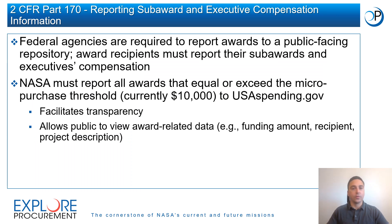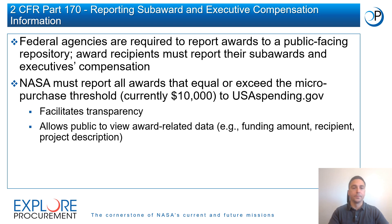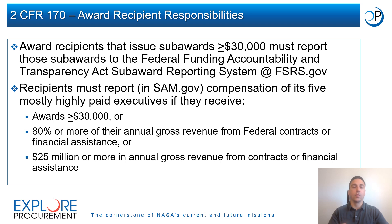2 CFR Part 170, Reporting Subaward and Executive Compensation Information, establishes requirements for federal agencies to report their awards to a public-facing repository and for award recipients to report their subawards and executive compensation. Per this part, NASA must report all awards that equal or exceed the micro-purchase threshold, currently $10,000, to USAspending.gov. Recipients that issue subawards equal to or exceeding $30,000 must report those subawards to the Federal Funding Accountability and Transparency Act Subaward Reporting System, or FSRS, at FSRS.gov, with information ultimately made available on USAspending.gov.